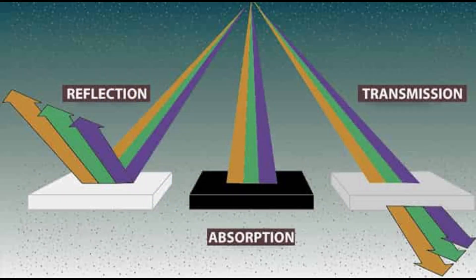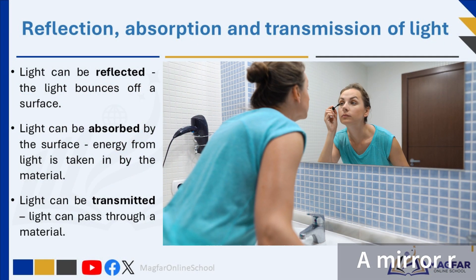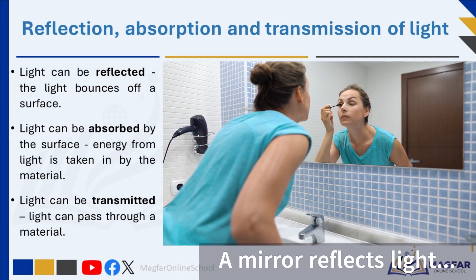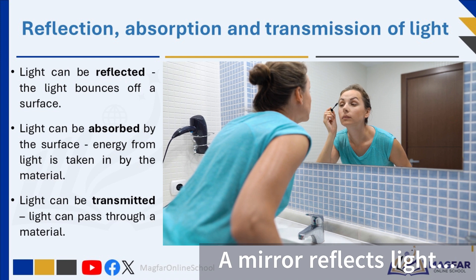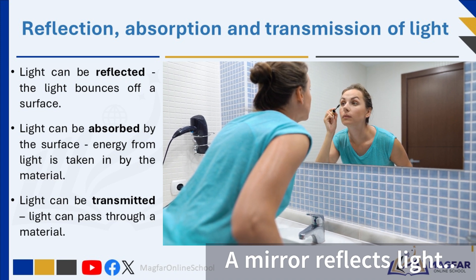When light hits a surface, three main things can happen. First, light can be reflected, which means the light bounces off the surface. This is what happens when you look in a mirror, as the light bounces back to your eyes.